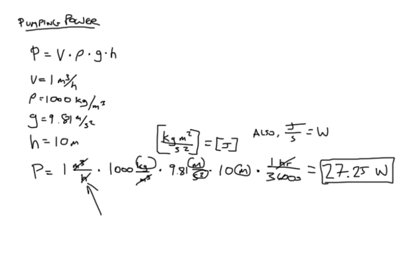So just real quick here, if we wanted to know the energy, say, over a 4-hour period, 27.25 watts for 4 hours is 109 watt-hours or 0.11 kilowatt-hours of energy.